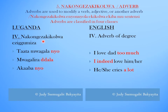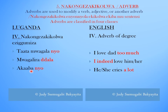The fourth classification is Nakongeza chikolwa eze gumiza — Adverb of degree. For example: Tata mwagala nyo — I love daddy too much. Mwagali laddala — I indeed love him or her. Akava nyo — He or she cries a lot.